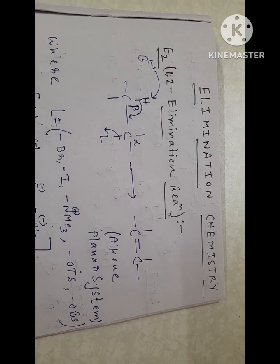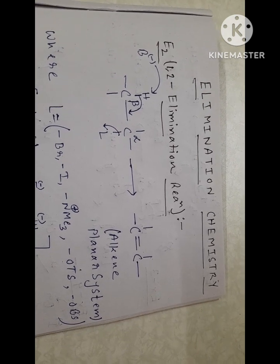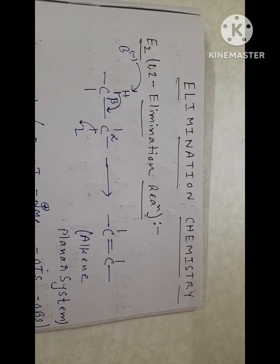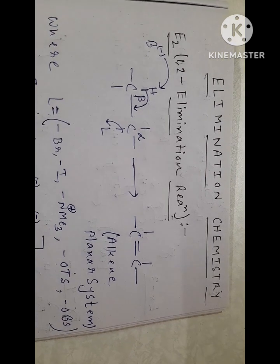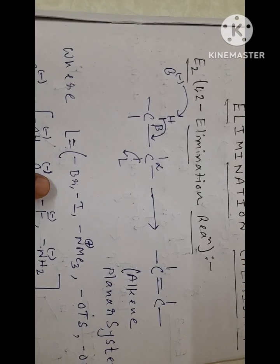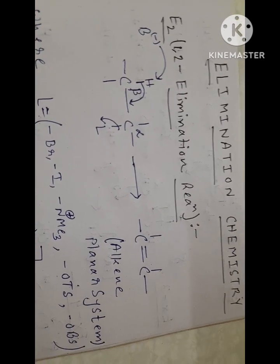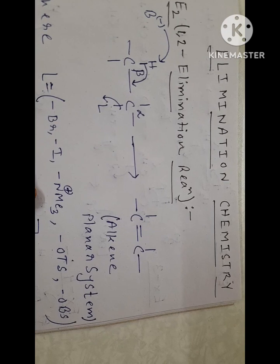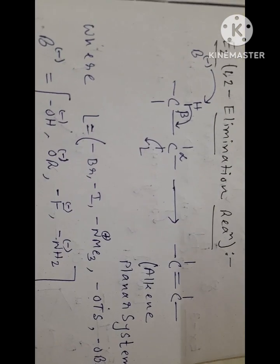1,2 elimination reaction, or you can say alpha-beta elimination reaction. In this reaction, these two groups as shown here are removed from alpha and beta position respectively, and the product alkene gets formed.